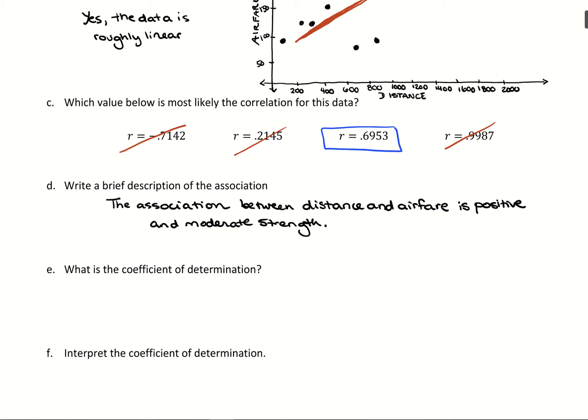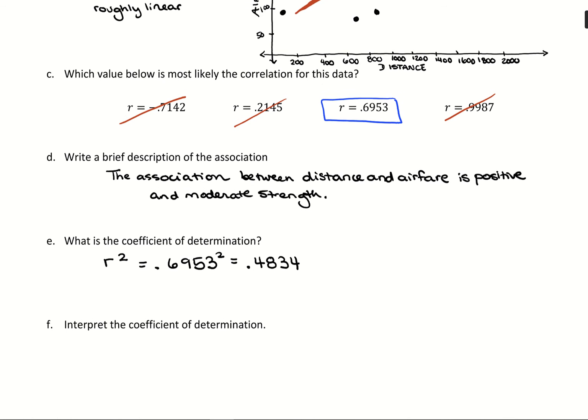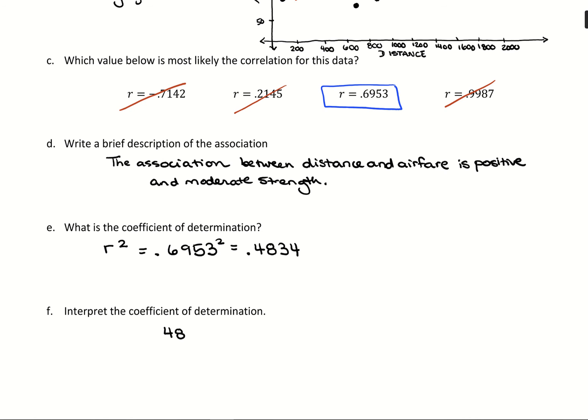Then coefficient of determination. We're going to look at R squared, which is 0.6953 squared, which will give us 0.4834. To interpret that value, we'll have 48.34% of the variability in our y value, which was airfare - so how airfare changes can be explained by distance.